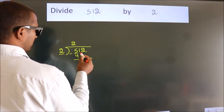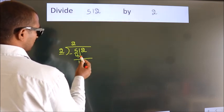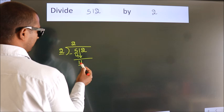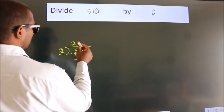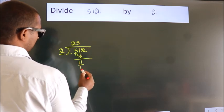After this, bring down the beside number. So 1 down, so 11. A number close to 11 in 2 table is 2 5s, 10.